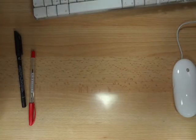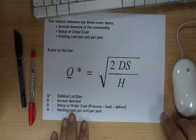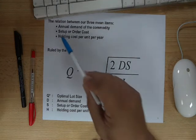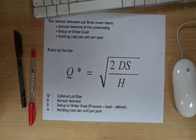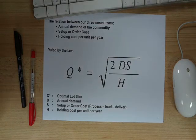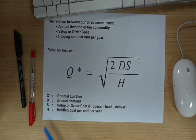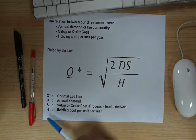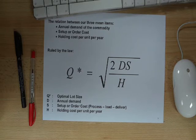The expert took all the information and formed the following equation, which demonstrates the relation between our three main items: annual demand of the chairs, setup or order cost, and holding cost per unit per year. The formula is: Q* = √(2DS/H). The symbols are — Q*: optimal order size; D: annual demand; S: setup or order cost; H: holding cost per unit per year.